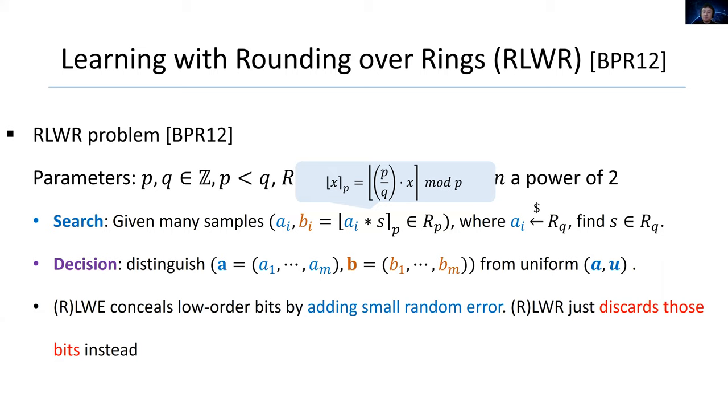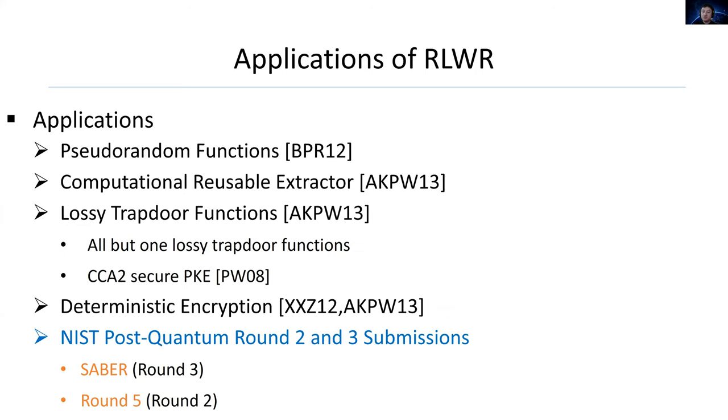The decision problem is to distinguish the pair (A,B) from uniformly random pairs. We know that ring LWE considers low-order bits by adding small random errors, and ring LWR just discards those bits instead. Ring LWR can be applied to many interesting crypto-primitives, such as pseudo-random functions, computational reusable extractors, non-interactive functions, oblivious transfer, and thus obtain CCA2 public encryption via the Peikert-Waters framework in 2008.